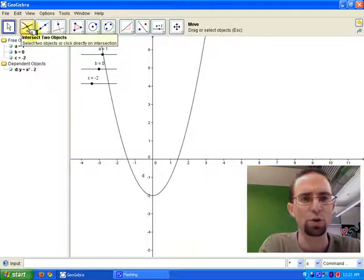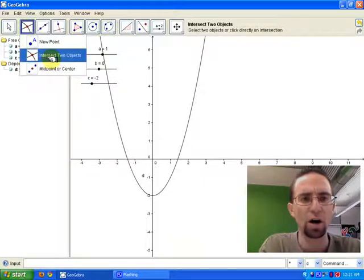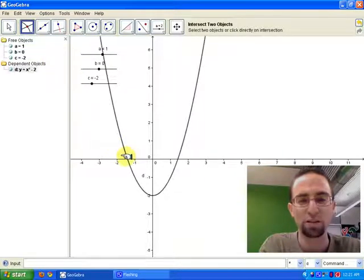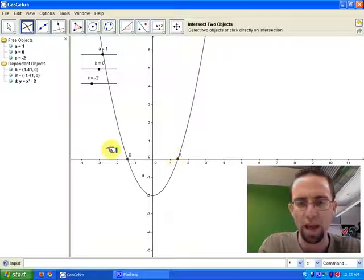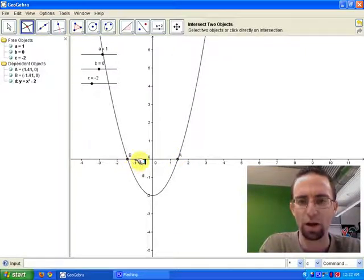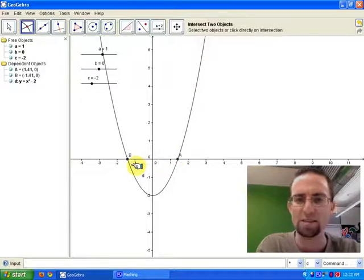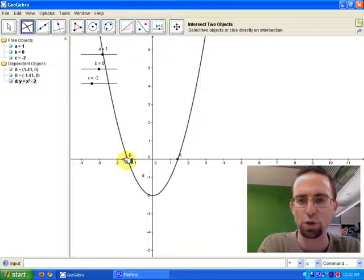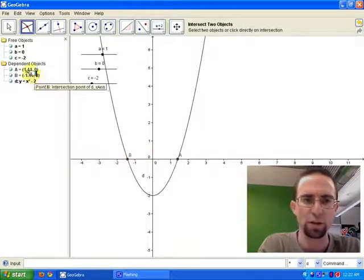And so then I can go over here to this tool, and click on Intersect to X, and click on the intersect right there. And so I clicked on the parabola and the axis, the X axis, and now it's created those two root points. And so there they are right there.